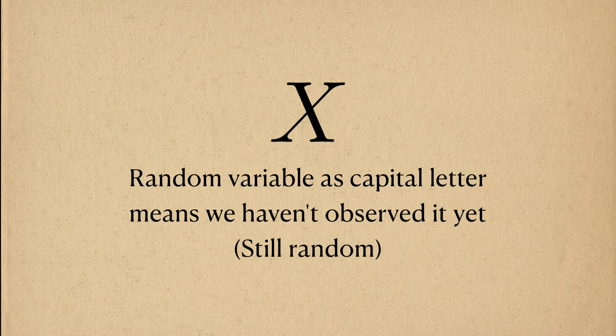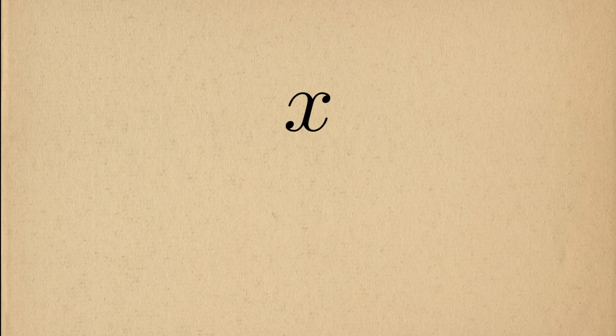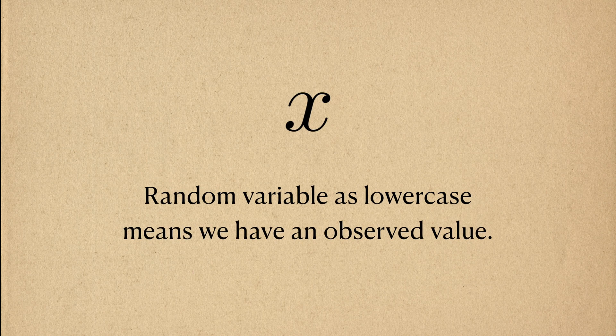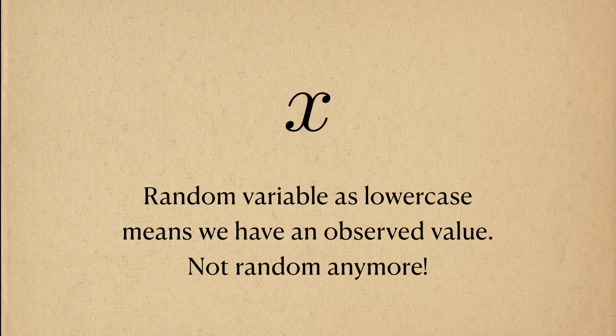You'll need to be familiar with a bit of notation. When a random variable is written as a capital letter, we are conveying that this object can take on different values. When we see a lowercase version of that same letter, we've actually observed a value from the random variable — it's no longer random since we've actually observed it.